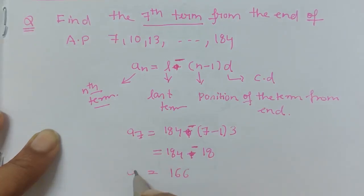So this will give us 166. The seventh term is 166.